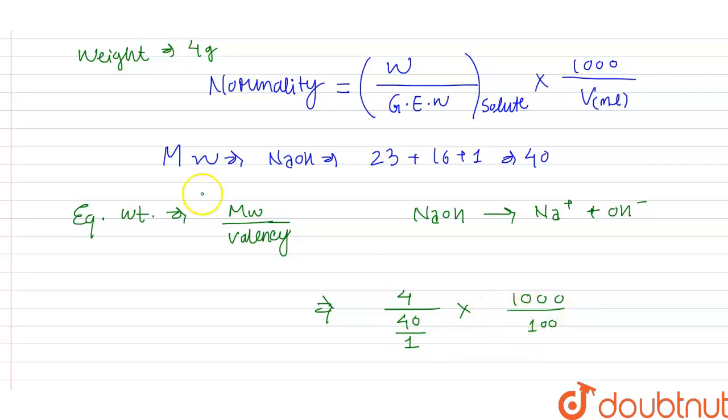So when we solve this equation, you can see these two zeros get cancelled out. This one zero will also get cancelled out and this cancels one time. So the normality of this will be 1 normal.